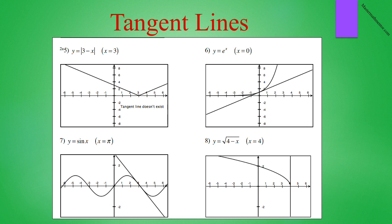In number five, the tangent line to y is equal to the absolute value of three minus x at x is equal to three doesn't exist. Later in the course, we'll find out why. In number six, the tangent line to the curve at x is equal to zero just grazes the curve. In number seven, the tangent line at x is equal to pi crosses the curve. And in number eight, y is equal to the square root of four minus x. The tangent line at x is equal to four is a vertical line. Don't be concerned if you did not get all of these. We still have not defined what a tangent line is, so we're only doing it based upon instinct.